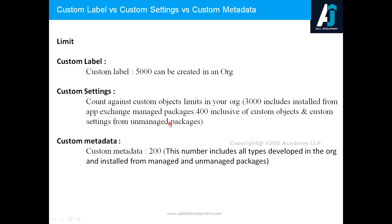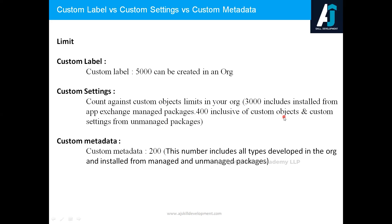For custom settings, they count against the governor limit for custom objects. For example, if you have five custom objects and create one custom setting, your total consumed count becomes six. You are allowed to create 400 custom objects inclusive of custom settings from unmanaged packages. If you install an unmanaged package with custom settings, those also count against this limit.